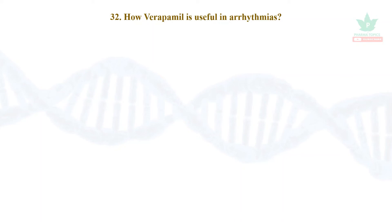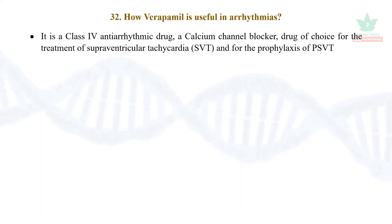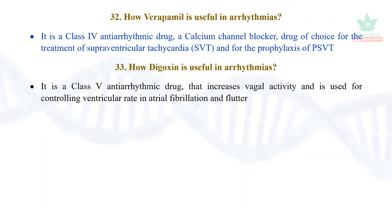Verapamil is a Class 4 anti-arrhythmic drug. It is the drug of choice for supraventricular tachycardia and prophylaxis of paroxysmal supraventricular tachycardia. Digoxin is primarily used in heart failure but is also a Class 5 anti-arrhythmic drug. It increases vagal activity, which is responsible for reduction of arrhythmias arising from atrial fibrillation and atrial flutter. It is not useful in ventricular arrhythmias; if it causes toxicity as ventricular arrhythmias, lidocaine is used.